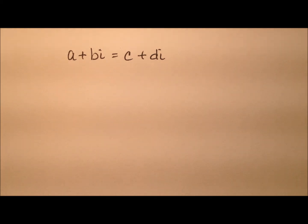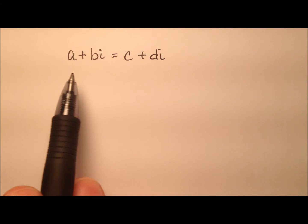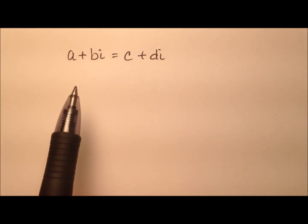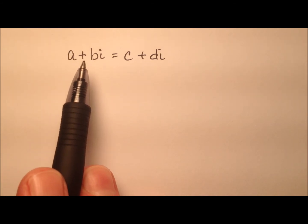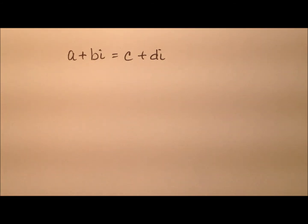So now let's go ahead and talk about the equality of two complex numbers. Take a look at the equation that I have written down. In order for this equation to be true, what sort of characteristics do these two complex numbers a plus bi and c plus di need to have? Well, the equality property of complex numbers tells us that in order for two complex numbers to be equal, their real parts and their imaginary parts must be equal.